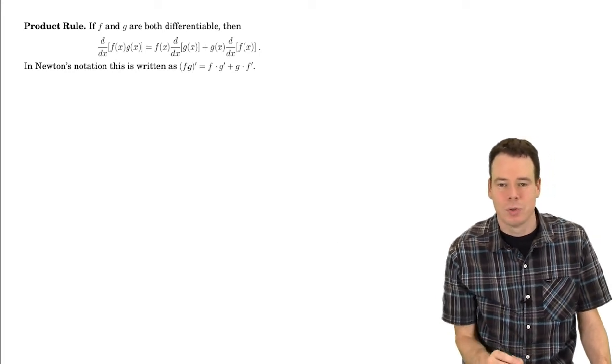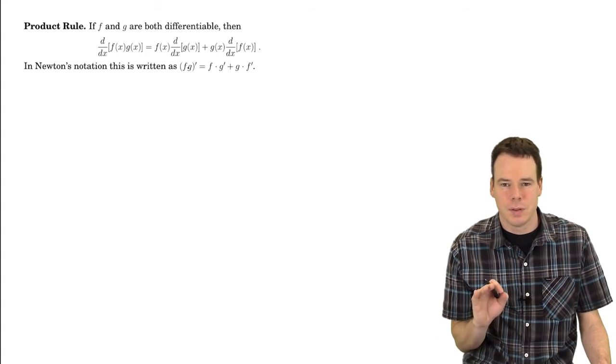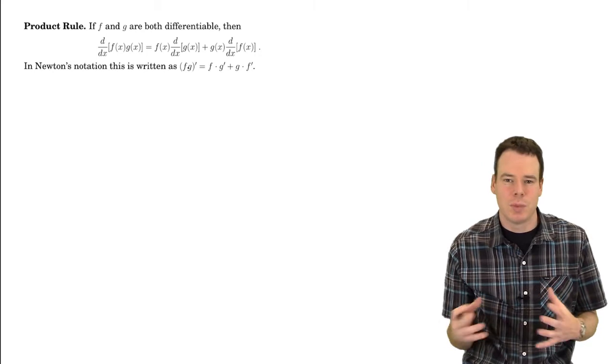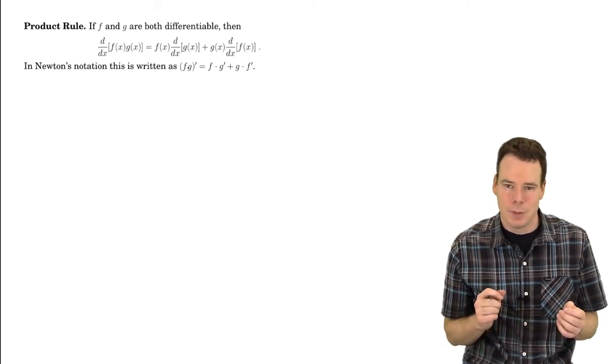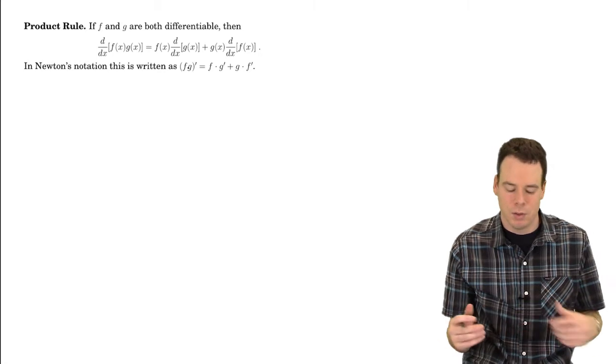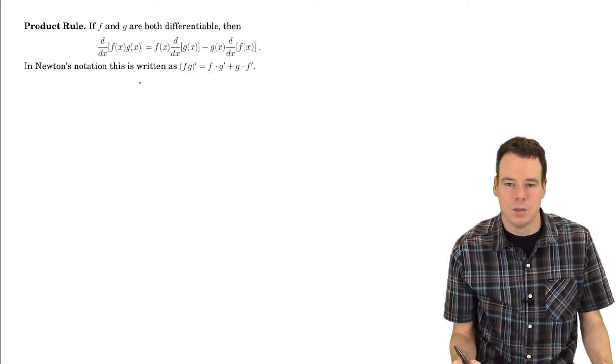In this video we're going to prove the product rule right from the definition of derivative. This is in contrast to the other video I did where I gave a sketch of the proof of the product rule using geometric intuition, looking at a diagram of what the product meant in terms of areas and then arguing how the change in the product should behave in terms of the change in the individual pieces.